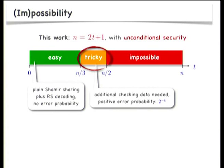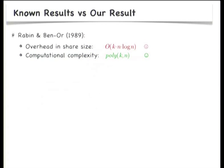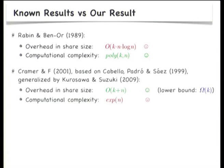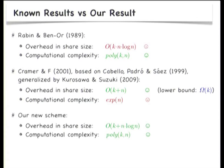What is known about robust secret sharing schemes in this area? Surprisingly little. There's a well-known scheme by Rabin and Benor from 1989. Their scheme has an overhead in the share size of order k times n, ignoring logarithmic factors, where k is the security parameter and n is the number of players. There is another scheme due to Cramer and myself which has only an overhead of k plus n rather than k times n. The downside is that reconstruction is exponential in the number of players. Our result here is a new robust secret sharing scheme with overhead of order k plus n and efficient sharing and reconstruction procedures.